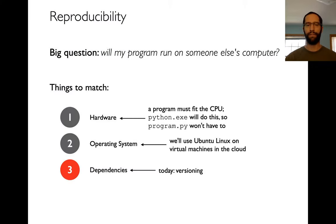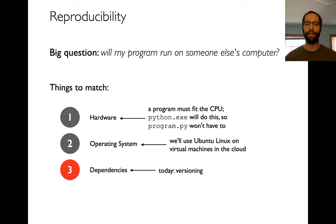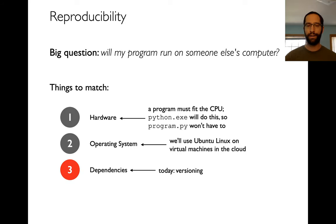We're going to pick up where we left off last time, answering this big question: will my program run on someone else's computer? This is a question of reproducibility. Last time we saw that we have to make sure the hardware fits, but that's not so much our concern because the Python interpreter takes care of that. We also have to worry about the operating system. And the third thing we have to worry about matching are dependencies.